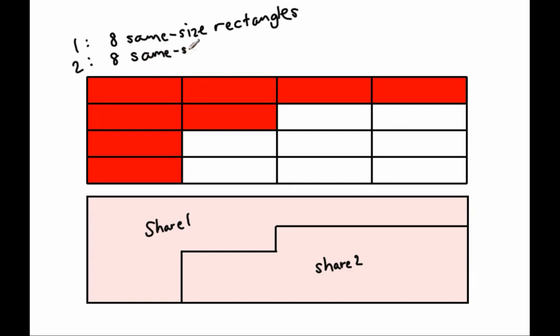In share two, we notice that there are eight same-size rectangles there as well. Now while the shares do not appear to have the same shape, we can clearly see that they represent an equal share. Share one represents eight, and share two represents eight same-size rectangles. Eight is equal to eight.